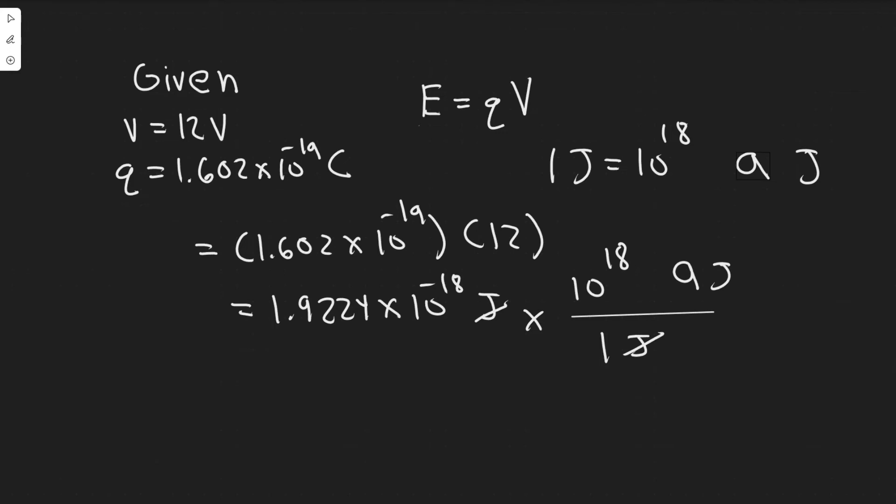And so in order to convert it into atto joules, you need to know that one joule is equal to 10 to the 18 atto joules. We just represent that by aj.